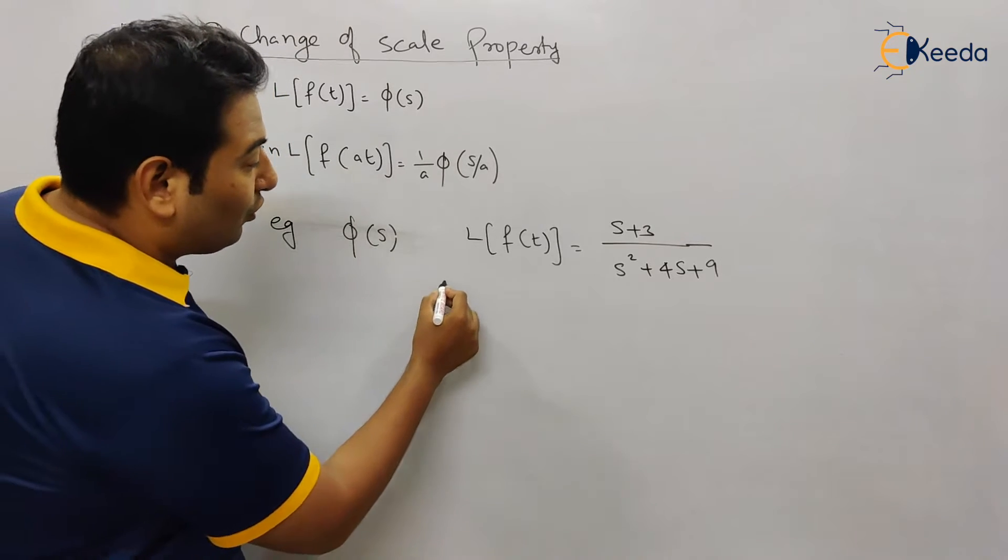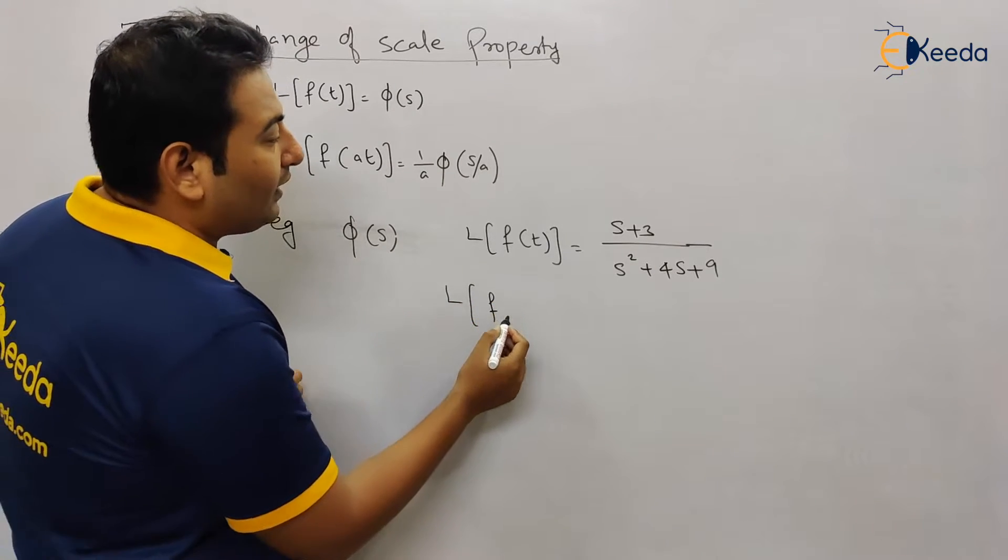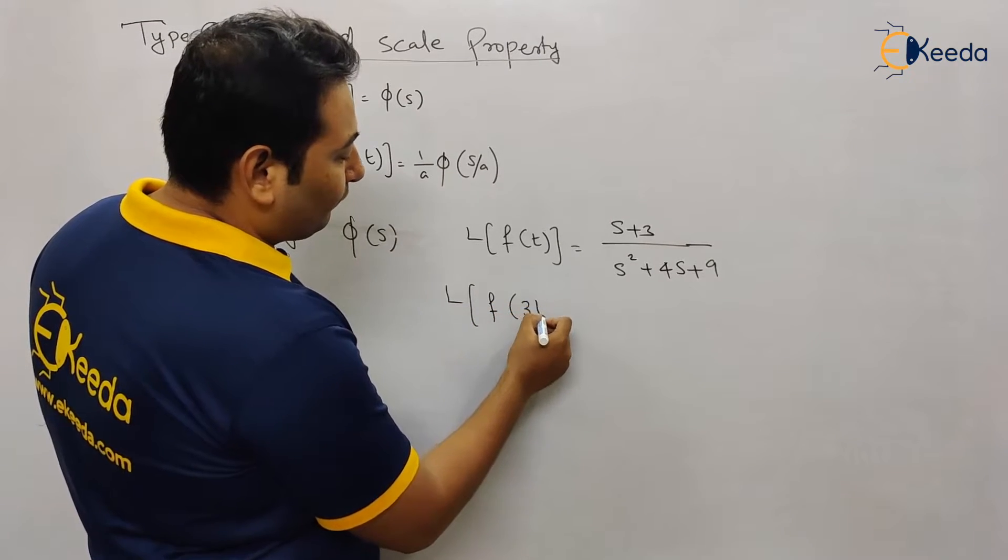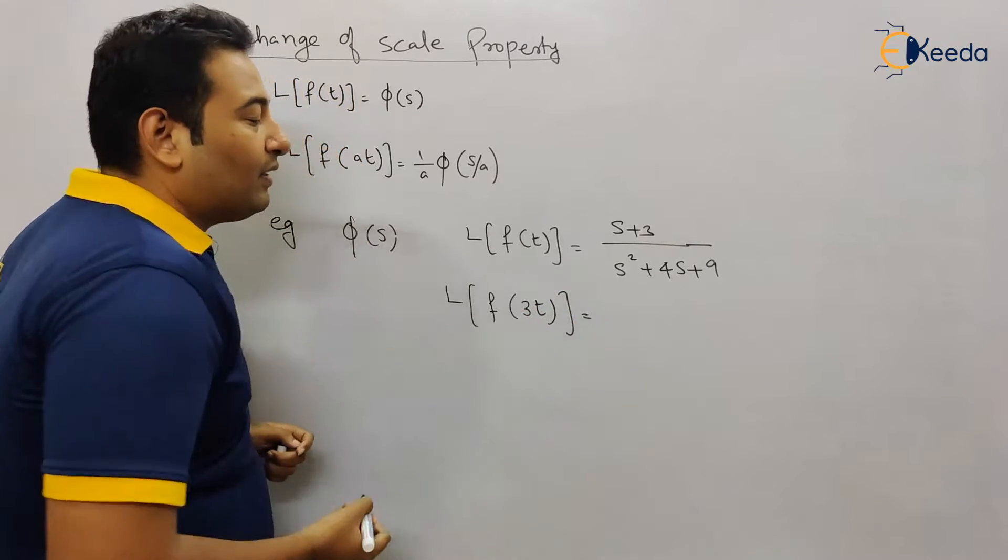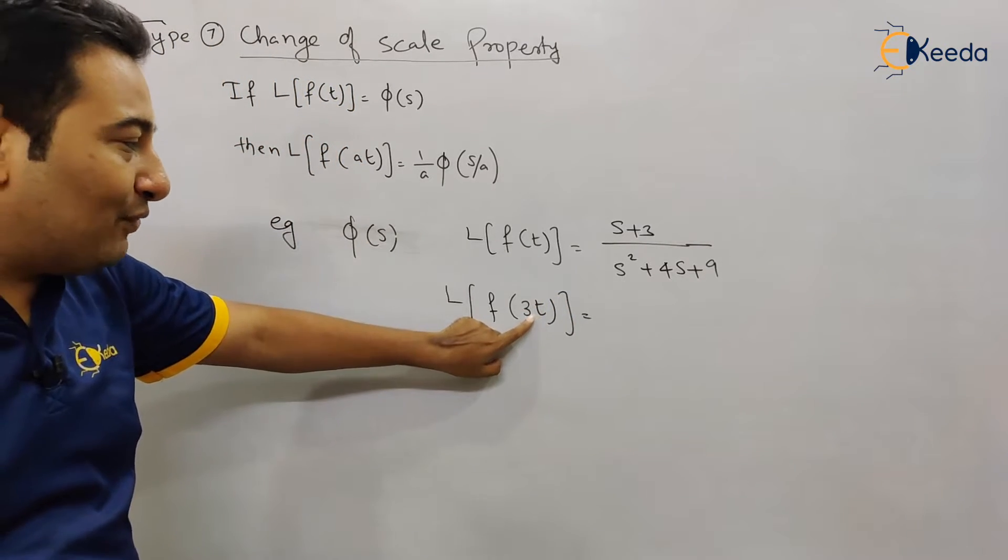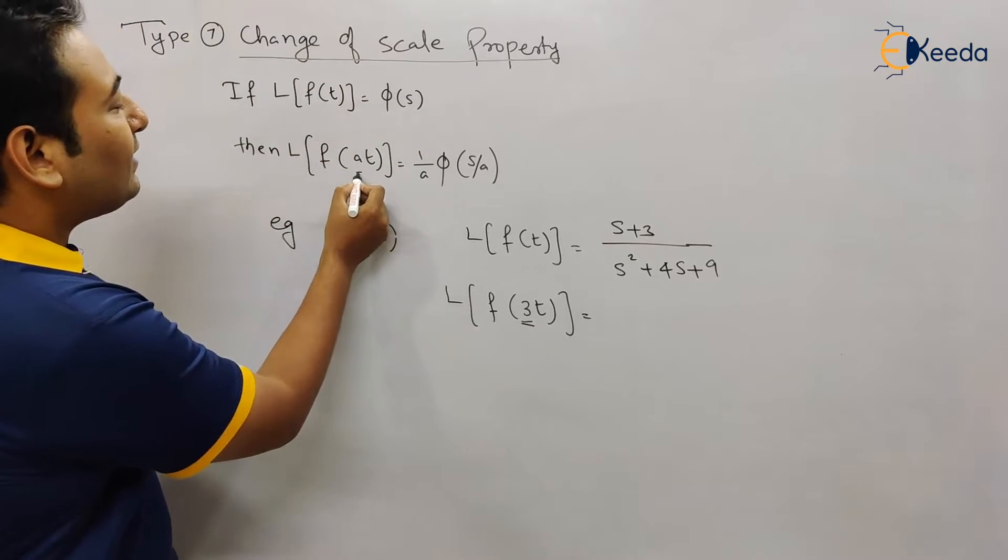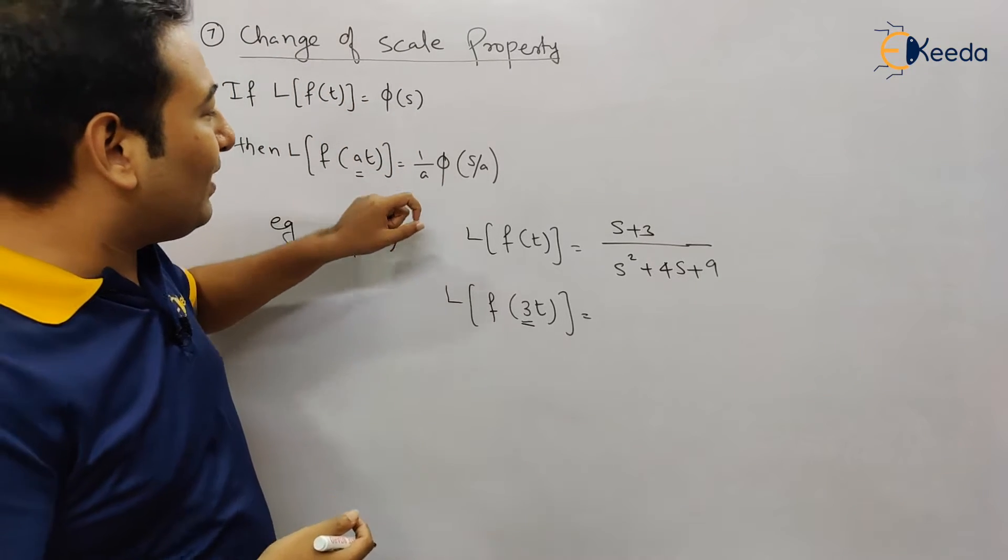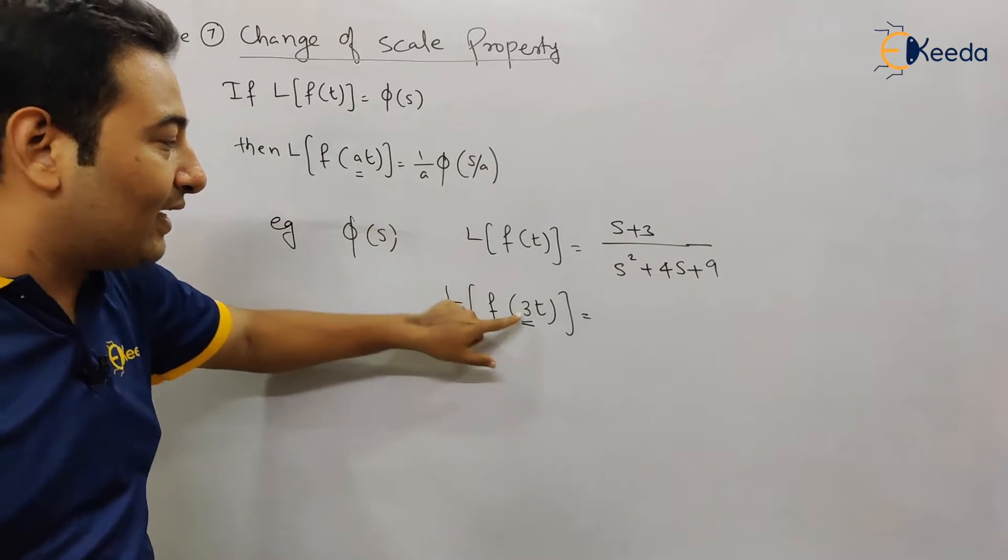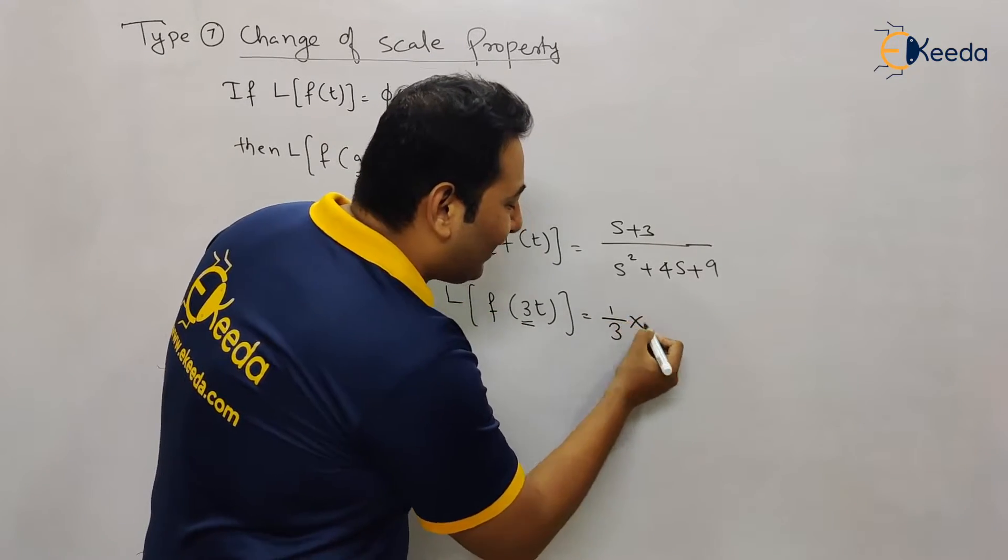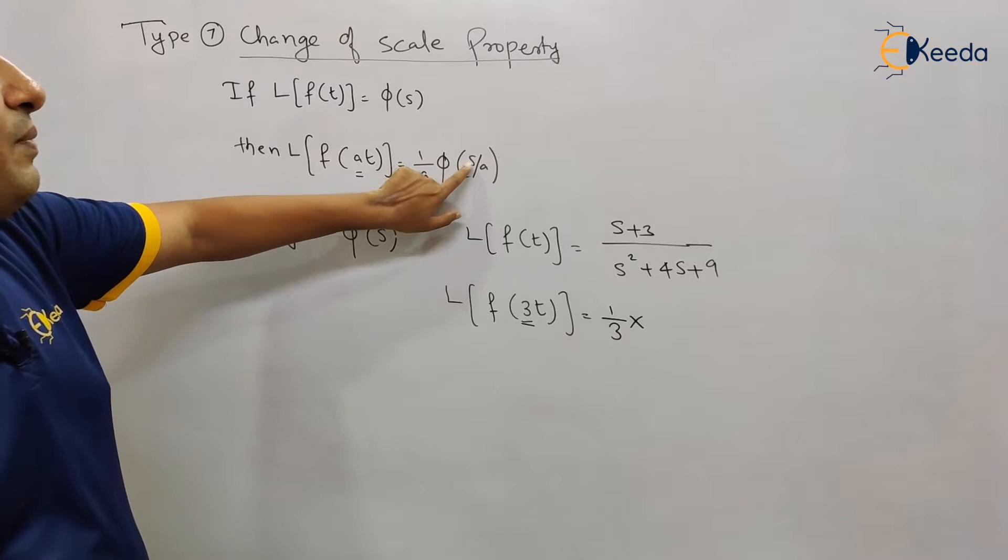And if it is asked to find Laplace of, let's say, f(3t), what will happen? This t is multiplied with 3, so this is your scaling factor. You need to multiply with 1/a. Here it is 3, so therefore it will be 1/3, and s will be replaced by s/a. That means wherever we get s, that must be replaced by s/a.